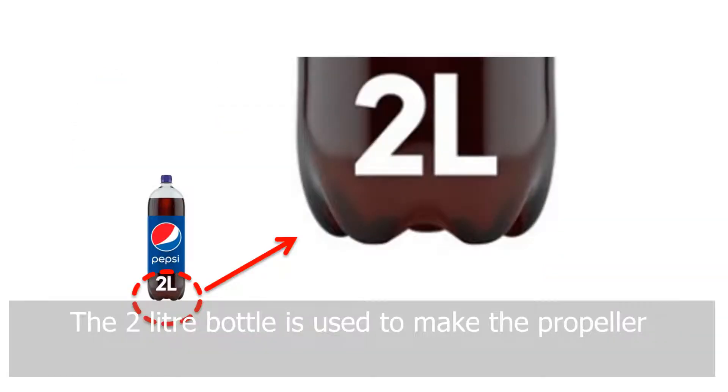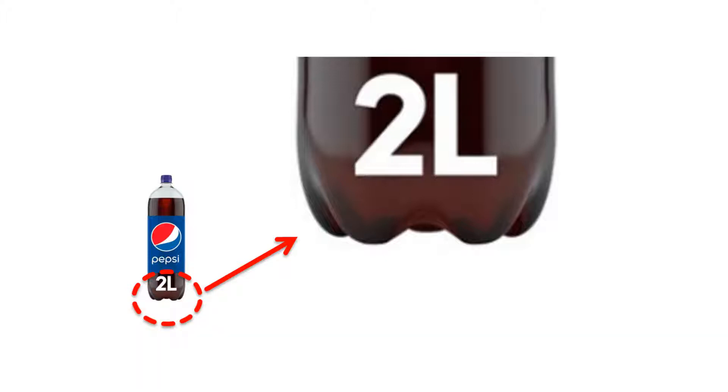The two-liter bottle is used to make the propeller. It doesn't need to be exactly two liters. Most importantly, it should have a bumpy bottom, which is the key feature to make a working propeller.